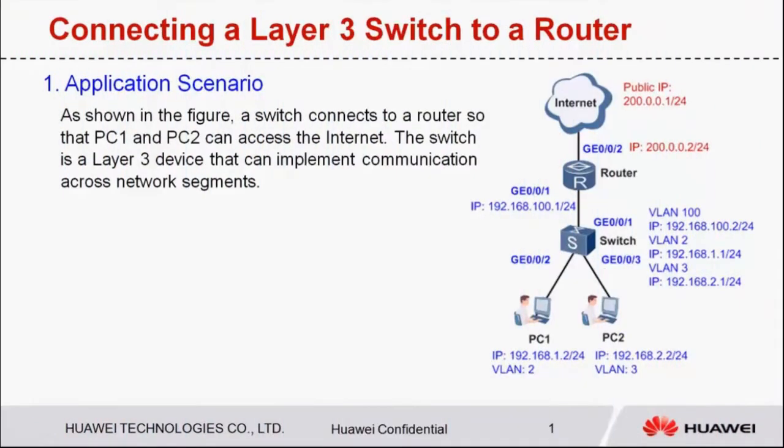Hi everyone. Today I'll show you how to configure a layer 3 switch and the router for when PCs access the internet. As shown in the figure, PC1 and PC2 access the internet through a switch and a router.